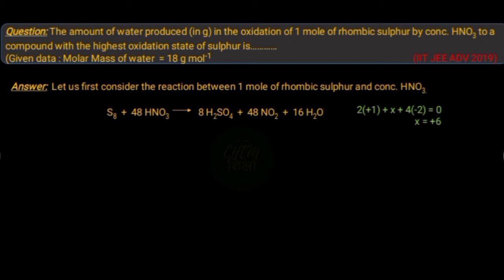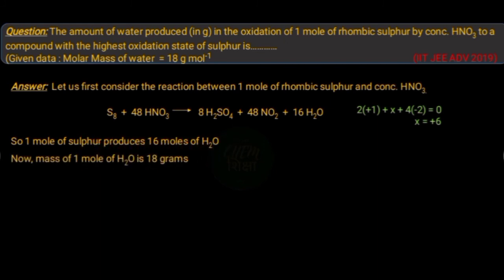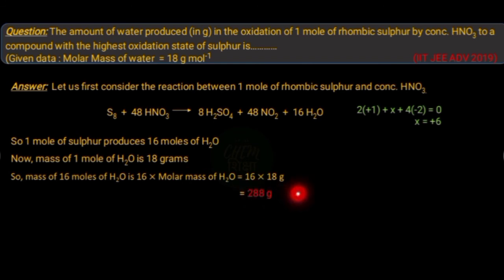Now according to this balanced equation, 1 mole of sulfur produces 16 moles of H2O. As mass of 1 mole of water is 18 grams, the mass of 16 moles of water molecules is 288 grams. Thank you.